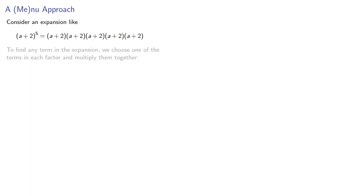So let's consider a menu approach. Consider an expansion like this. To find any term in the expansion, we choose one of the terms in each factor and multiply them together.